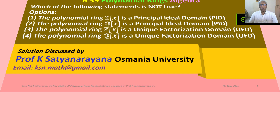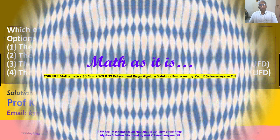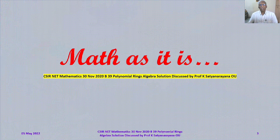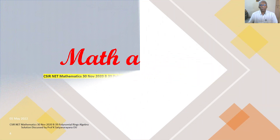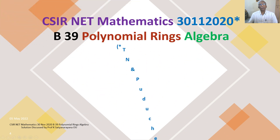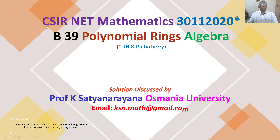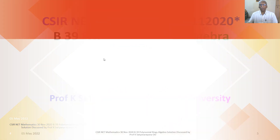We now discuss the solution of a problem from the section Algebra. This problem is on polynomial rings and has appeared in the CSIR National Eligibility Test held on 30th November 2020, from section B.